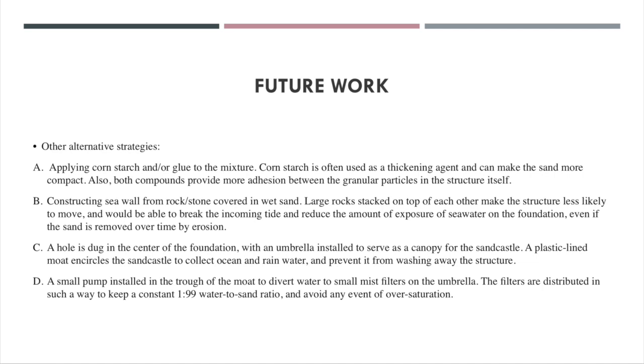A third alternative strategy involves digging a hole in the center of the foundation and installing an umbrella to act as a canopy for the sandcastle. A plastic lined moat surrounding the sandcastle at its base would collect all the ocean and rainwater and prevent it from completely washing away the structure. And in extension to that, we would install a small pump at the base of the moat to divert the water to small mist filters that are installed on the umbrella. The filters would be distributed in such a way that would help to keep the sandcastle moist at a constant water-to-sand ratio of 1 to 99.